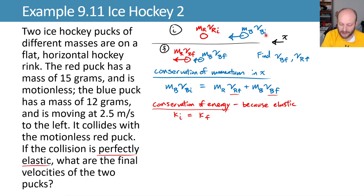Due to that elastic nature of the collision, we know that the final kinetic energy has to equal the initial kinetic energy. Looking at my diagrams, I can write my initial kinetic energy is just coming from the blue puck, one half mb vbi squared. And my final kinetic energy is coming from both pucks: one half mr vrf squared plus one half mb vbf squared. At this point, we have two equations, two unknowns, and we solve this equation and this equation simultaneously to get vrf and vbf.